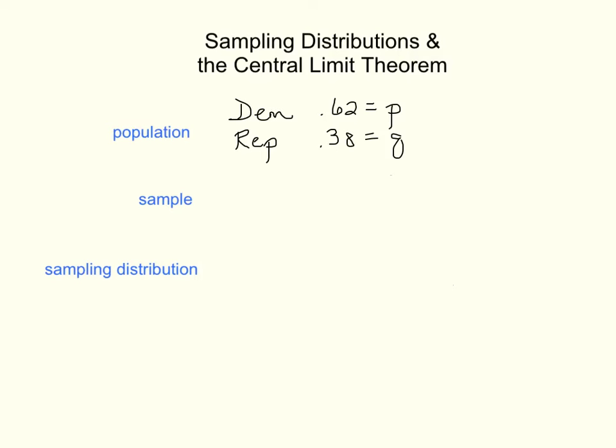Now, suppose that we were to conduct a survey and collect a sample of 10 people. So our sample size is 10. So we would get these 10 people, and we would calculate from these 10 people the proportion that are Democrat and the proportion that are Republican.